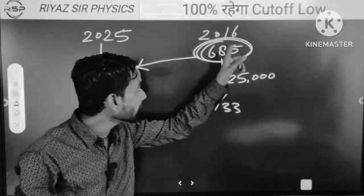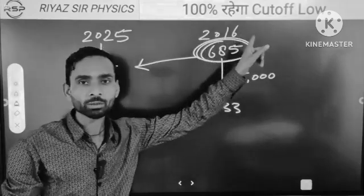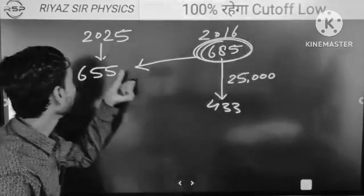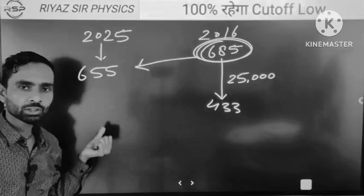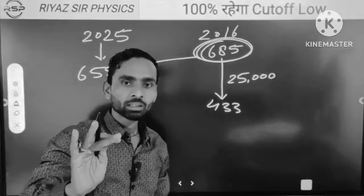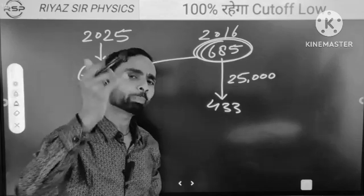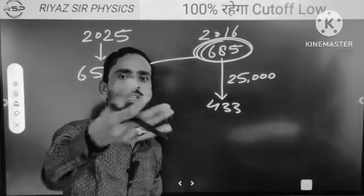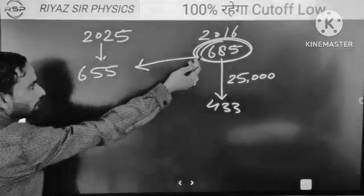An institute has proved that the situation looks worse than NEET 2016 and the topper is going even lower. When the topper goes down, won't the normal students go down? They will. This was our calculation from before which Akash has now shown.